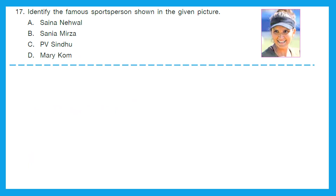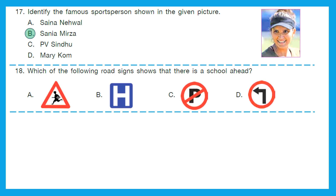Question 17: Identify the famous sports person shown in the given picture. Is it Saina Nehwal, Sania Mirza, P.V. Sindhu, or Mary Kom? She is Sania Mirza. Option B is the right answer. Question 18: Which of the following road signs shows that there is a school ahead? B tells left turn, C tells no parking, B tells hospital ahead, and A tells school ahead. So option A is the right answer.